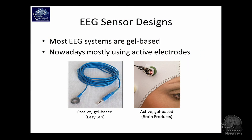Most EEG systems on the market are still based on electrode gel — conductive gel. It's some kind of salty electrolyte solution. Here's a so-called passive electrode; it's just a metal ring. You put it on the cap and squeeze some gel in there, and that makes a good contact. It doesn't have an amplifier in it or anything.